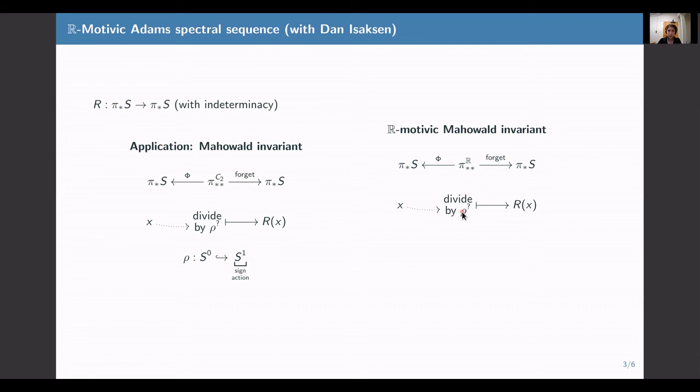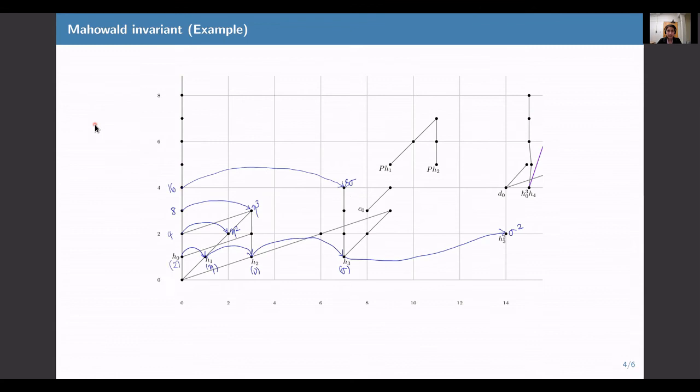So now there are two maps from the stable homotopy groups of spheres to itself. There's the original Mahowald invariant, and then there's this variant that involves R-motivic homotopy theory. In general, R-motivic computations are easier than C2-equivariant computations, and so computing the R-motivic Mahowald invariant directly is easier than computing the classical Mahowald invariant. These two constructions don't always agree, but they do agree in some interesting cases.